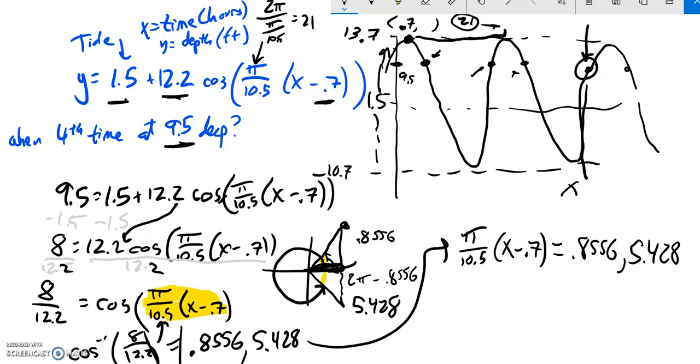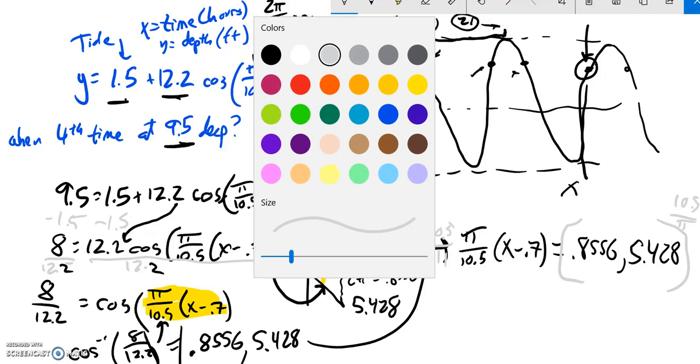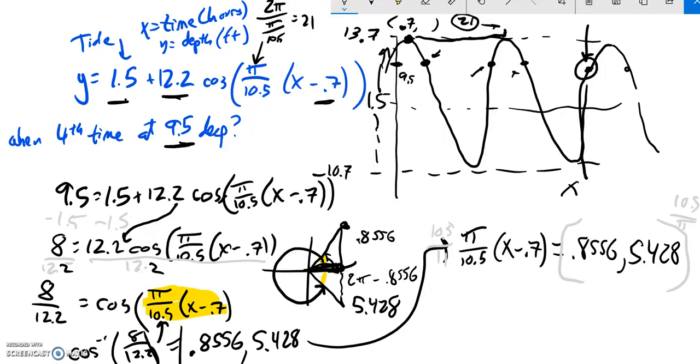So then now I'm just going to do some more algebra to solve this. And notice I have two things here. I'm going to do whatever I do to the left side, I'm going to do it to both sides here on the right. So pi over 10.5, I'm going to multiply by 10.5 over pi. So I'm going to multiply both of these by 10.5 over pi. This first one times 10.5 over pi becomes 2.860. The second one becomes 18.142.